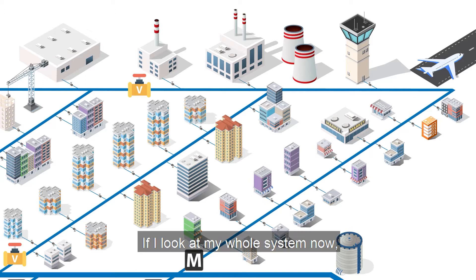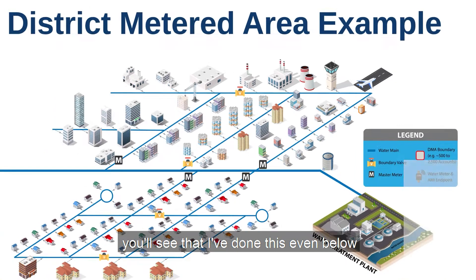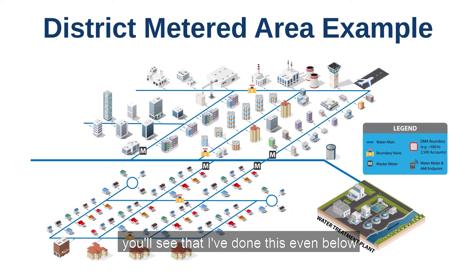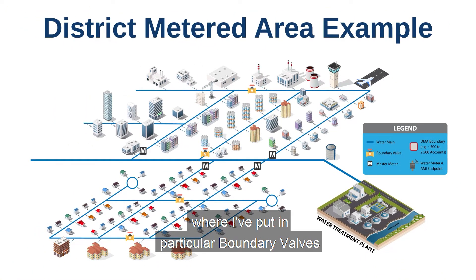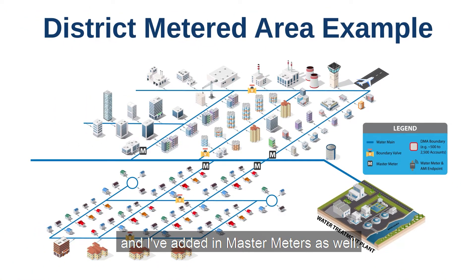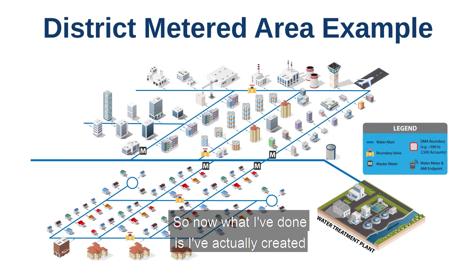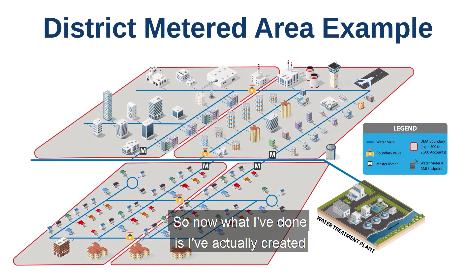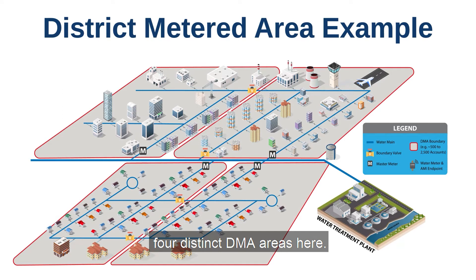Looking at the whole system now, you'll see that boundary valves and master meters have been added throughout, creating four distinct DMA areas.